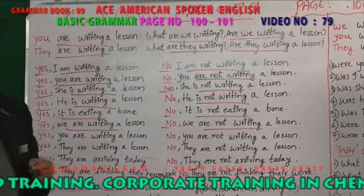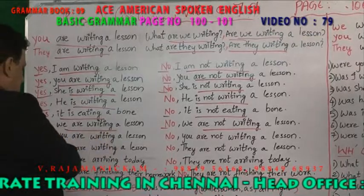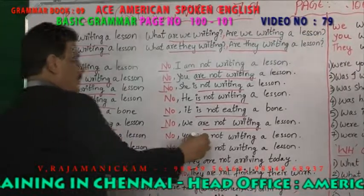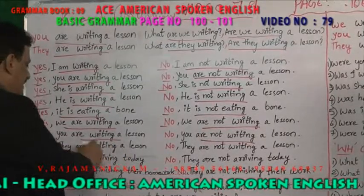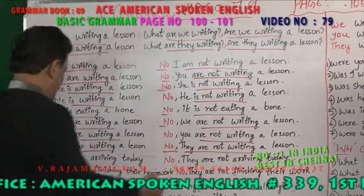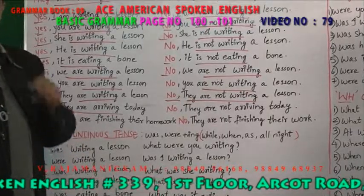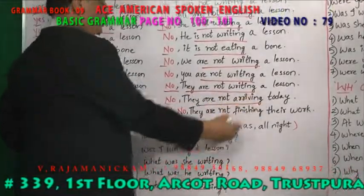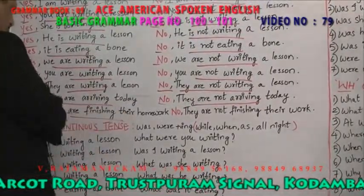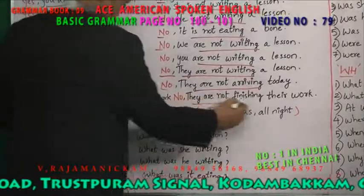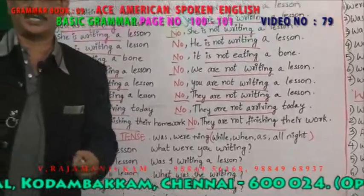Yes, we are writing a lesson. No, we aren't writing a lesson. Are you writing a lesson? Yes, you are writing a lesson. No, you aren't writing a lesson. Yes, they are writing a lesson. No, they aren't writing a lesson. Yes, they are arriving today. No, they aren't arriving today. Yes, they are finishing their work. No, they aren't finishing their work.